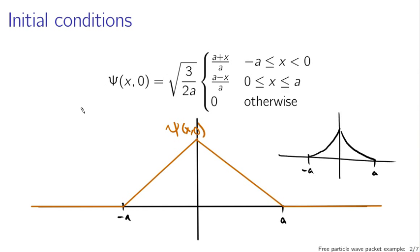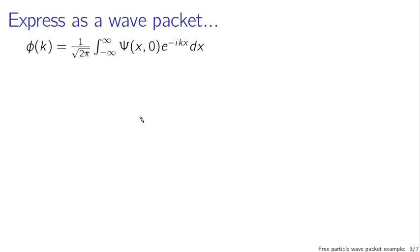So how would we go about expressing this initial condition as a superposition of these infinite traveling waves? The result from Fourier analysis we're using now is the expression for phi of k, the representation of the wave function in terms of k, where k is related to the energy and the spatial wavelengths of the traveling wave.